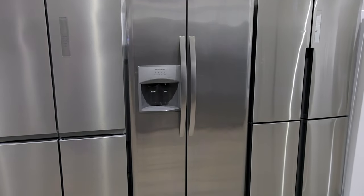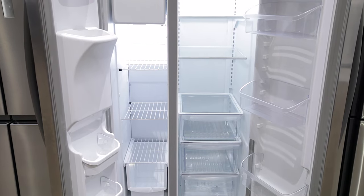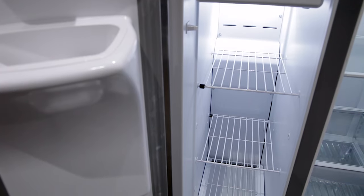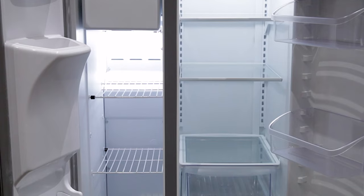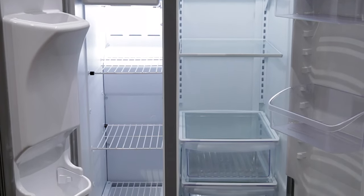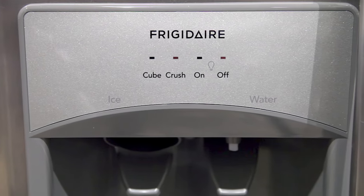This side-by-side refrigerator by Frigidaire has a fresh food capacity of 14.2 and a freezer capacity of 7.9 for a total capacity of 22.1 cubic feet. It has a stainless front with two stainless handles and an external ice and water dispenser.